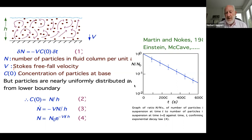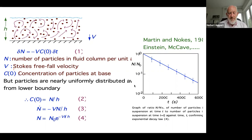Because of the turbulent flow, the concentration is pretty uniform, so it's the number of particles over the height h. When we put that together, we get a simple ordinary differential equation which says that the number of particles goes down exponentially with a component proportional to the velocity of the particle — the Stokes free fall velocity — and inversely proportional to the height.